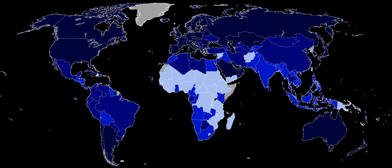Before the 2010 index, the HDI combined three dimensions as last used in its 2009 report: life expectancy at birth as an index of population health and longevity; knowledge and education as measured by the adult literacy rate with two-thirds weighting, and the combined primary, secondary, and tertiary gross enrollment ratio with one-third weighting; and standard of living as indicated by the natural logarithm of GDP per capita at purchasing power parity. This methodology was used by the UNDP until their 2011 report.